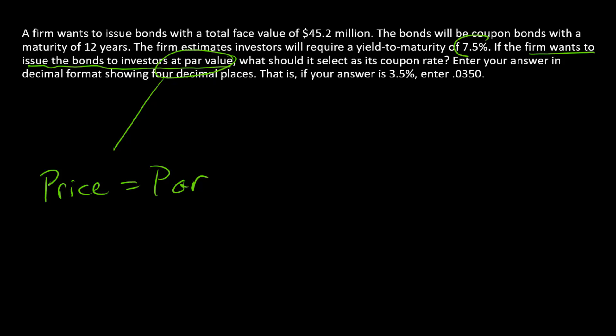We know what the yield to maturity needs to be. So there's our yield to maturity. And at the time of issuance, the firm gets to choose the coupon rate.